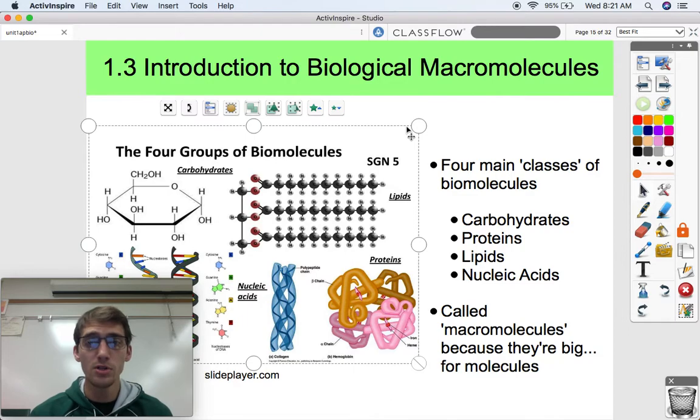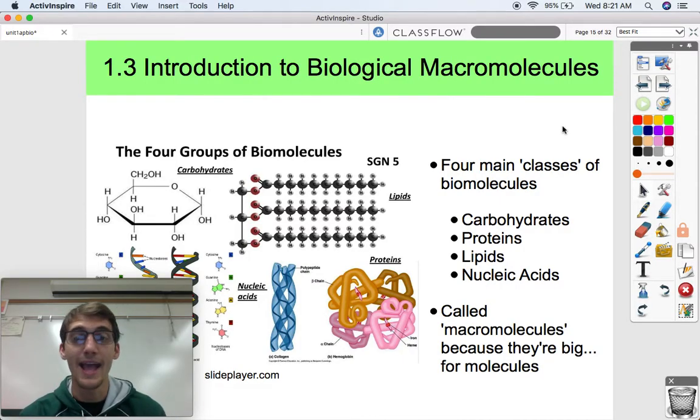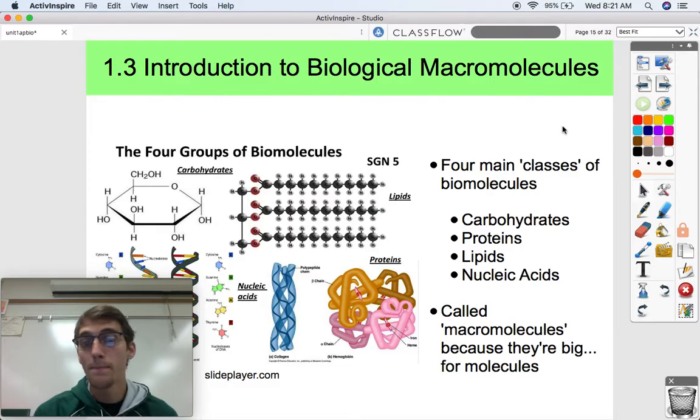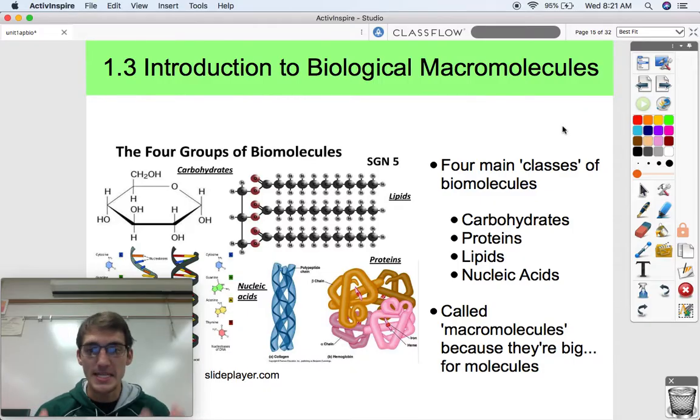All right, so as I've alluded to before, we have four main classes of biomolecules. We talked about this in the last lesson. There's carbohydrates, proteins, lipids, and nucleic acids. So those four biomolecules, we call them macromolecules as opposed to micromolecules. Macro means they're big as far as molecules go.